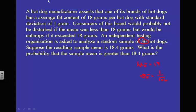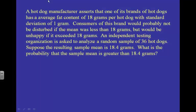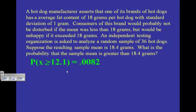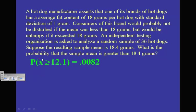So μ sub x-bar is going to equal 18, and σ sub x-bar is going to equal 1 divided by the square root of 36. Based on those two pieces of information, we can calculate the probability that x-bar is greater than 18.4.